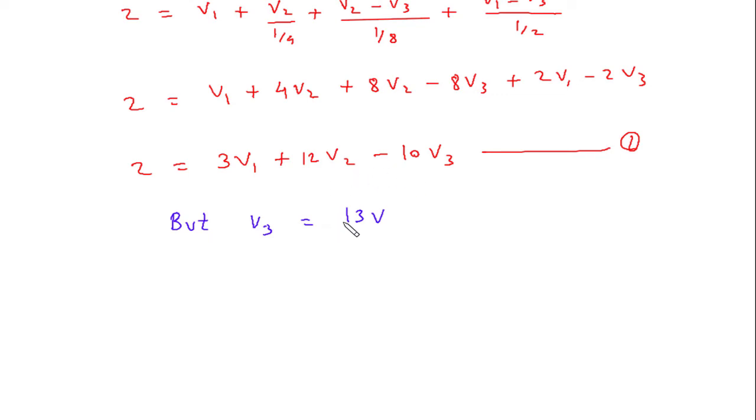So we will write this value in this equation, so it will be 2 is equal to 3V1 plus 12V2 minus 10 into 13. So this equation will be 3V1 plus 12V2 is equal to this will be 130, and if it goes on left side so it will be plus 130. 130 plus 2 will be 132. Say this is equation number A.